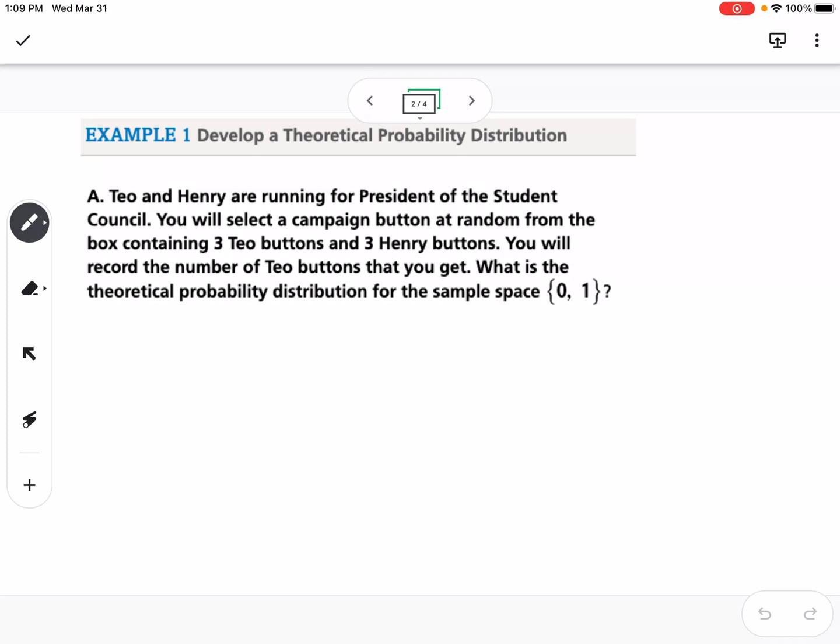What we have to think about is that you're equally likely to get either zero or one if you're only drawing one button because there's three of each. So our probability of zero is one-half, and our probability of one is also one-half.